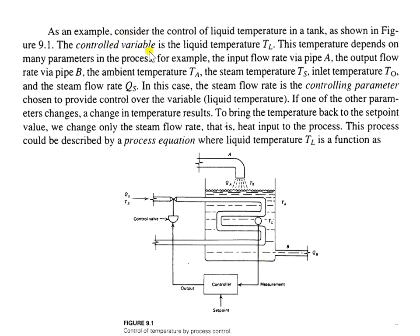The control variable is the liquid temperature, TL. This temperature depends on many parameters in the process. For example, the input flow rate via pipe A, the output flow rate via pipe B, the ambient temperature TA, the steam temperature TS, the inlet temperature T0,